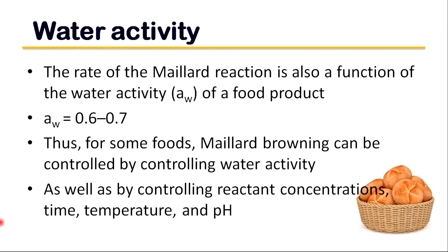The rate of the Maillard reaction is also a function of the water activity of a food product, reaching a maximum at water activity values in the range of 0.6 to 0.7. Thus, for some foods Maillard browning can be controlled by controlling water activity as well as by controlling reactant concentration, time, temperature, and pH.